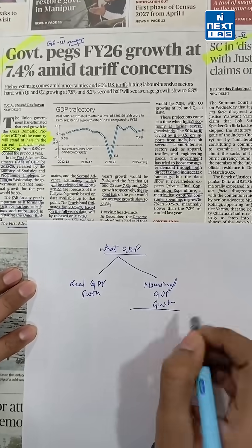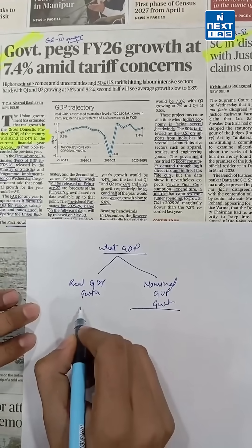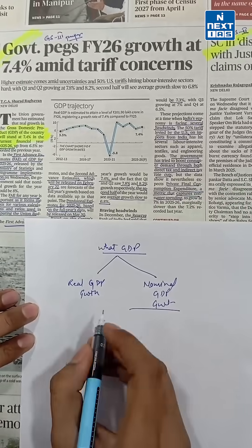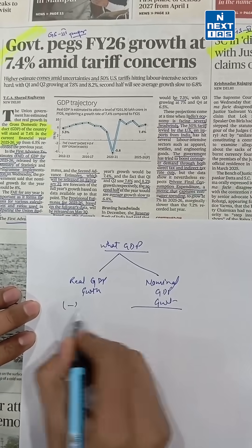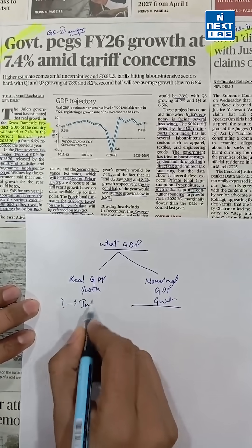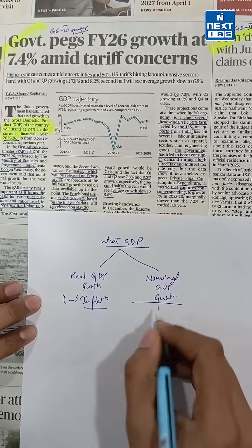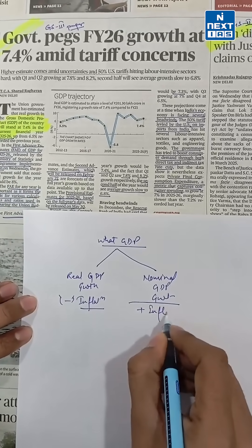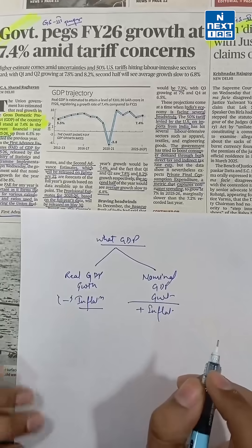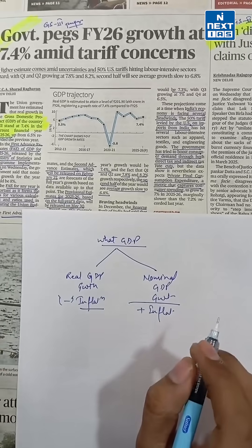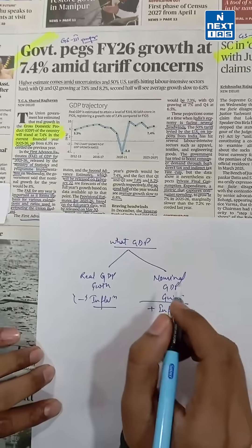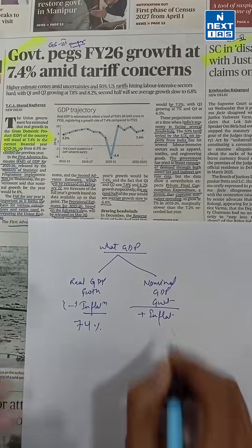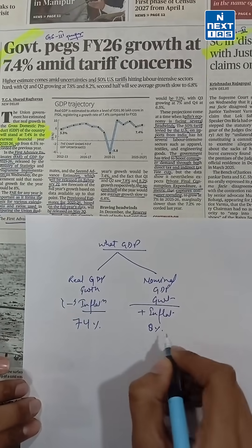Real GDP growth shows growth after removing inflation — that means inflation is excluded. Nominal GDP growth, on the other hand, includes inflation. The government has stated in this news that real GDP growth will be 7.4% and nominal GDP growth will be 8%.